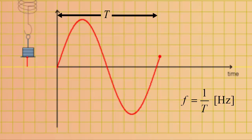So if an oscillation has a period of 0.25 seconds, then what is the frequency of the oscillation?